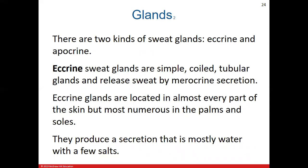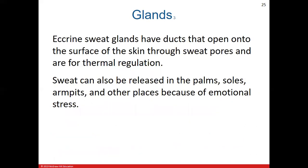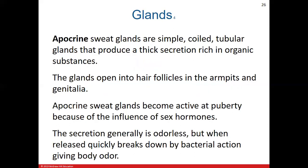Eccrine glands are the majority of your sweat glands and are found pretty much everywhere in the body. They're most numerous in the palms and soles of the feet. The sweat they produce is mostly water but contains a little bit of salts and even a small amount of urea. Eccrine sweat glands have ducts that open onto the surface of the skin through sweat pores, and this helps with temperature regulation — as body temperature rises, sweat glands release sweat to help cool you down.